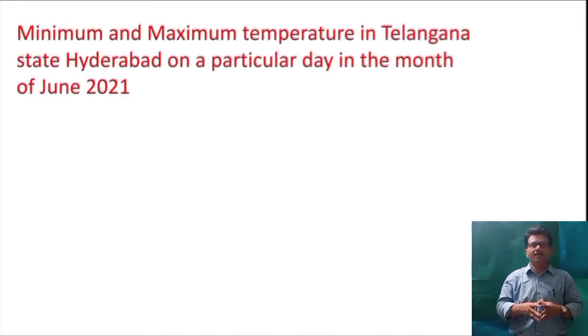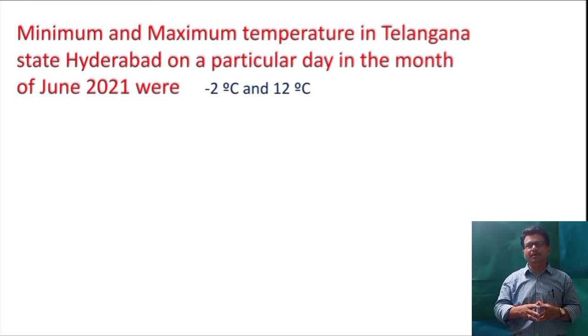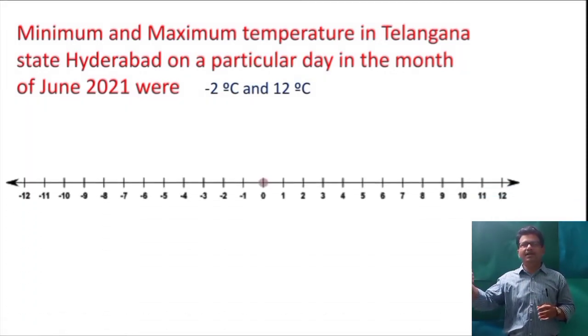Now coming to one more example. The minimum and maximum temperature of Hyderabad on a particular day in the month of June 2021 are minus 2 degrees Celsius and 12 degrees Celsius. How can we represent? Yes. By using number line we can represent the temperature of a day.